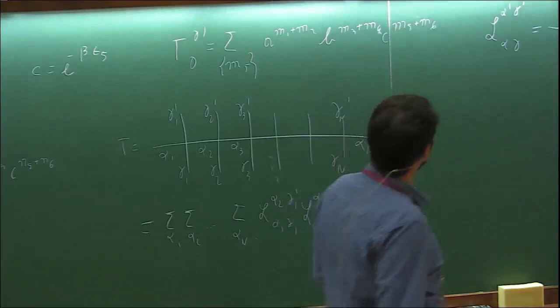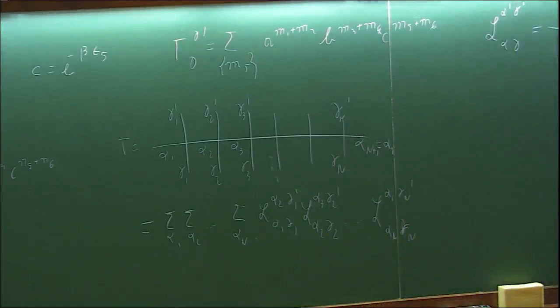You consider this not as a four-dimensional object but as a two-by-two matrix with elements acting on the vertical space. And this is pretty much where you stop if you don't have integrability.